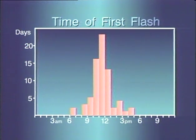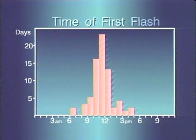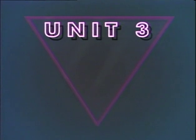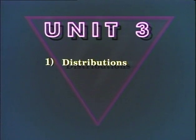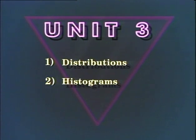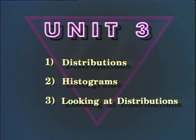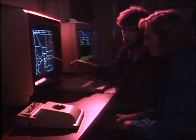What Lopez and his colleagues did was to organize the data with a special kind of graph called a histogram, which is what we'll explore in this unit. We'll continue our look at distributions, which display the values taken by a variable. We'll learn that we can use histograms to represent distributions when we have substantial amounts of data, and we'll learn to examine histograms for qualities such as symmetry, outliers, gaps, and skewness.